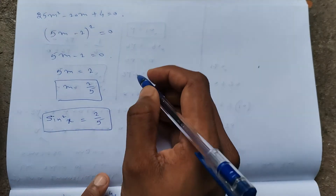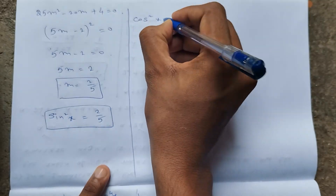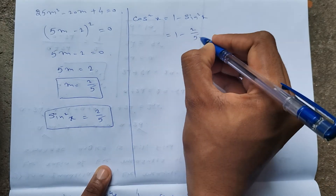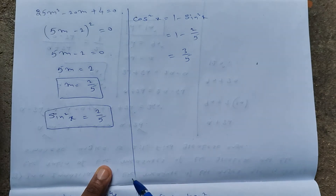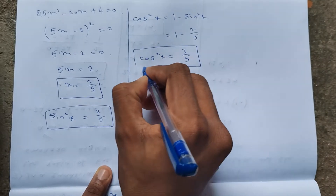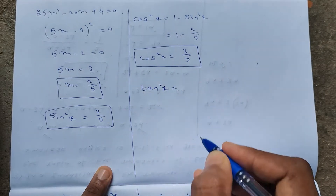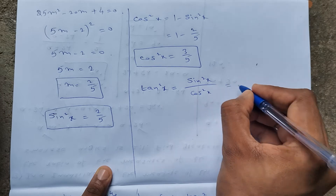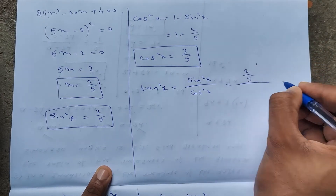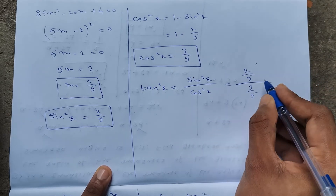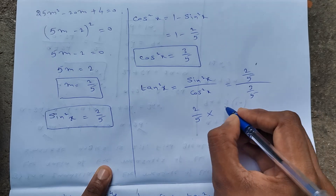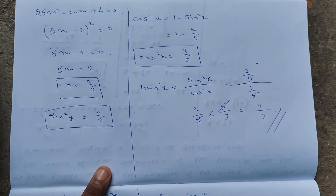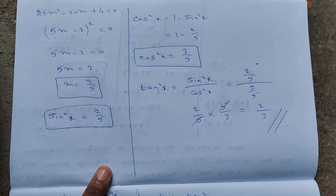From sin²x = 2/5, cos²x = 1 − 2/5 = 3/5. Therefore tan²x = sin²x / cos²x = (2/5) / (3/5) = 2/5 × 5/3 = 2/3. The value of tan²x is 2/3.